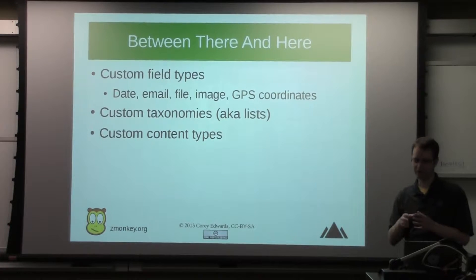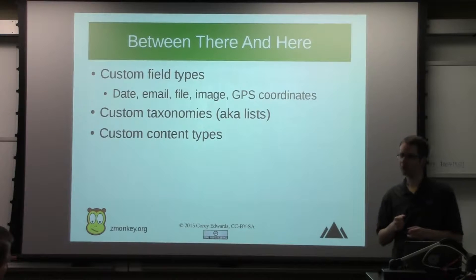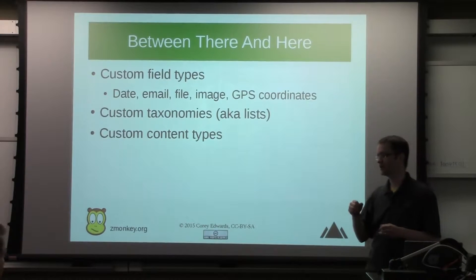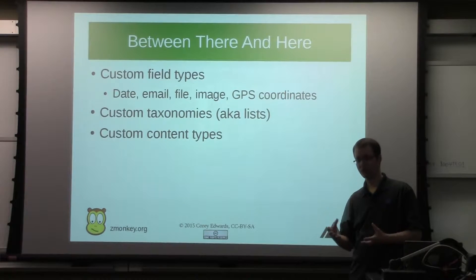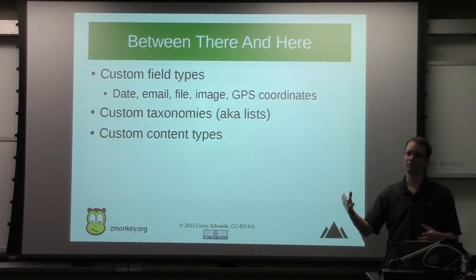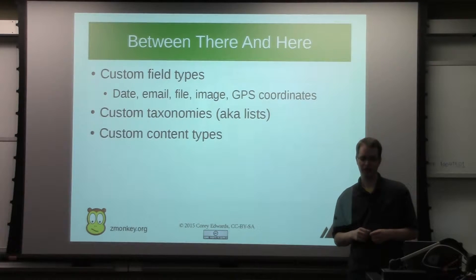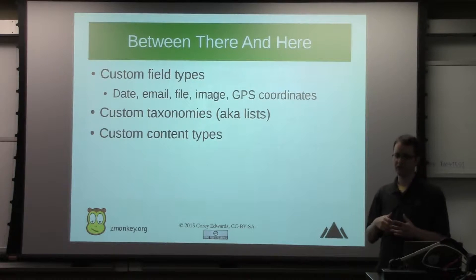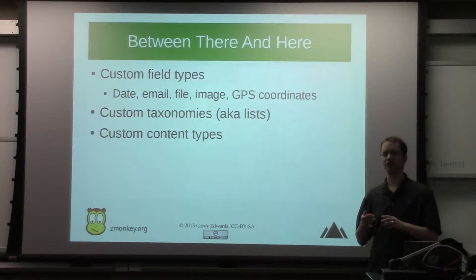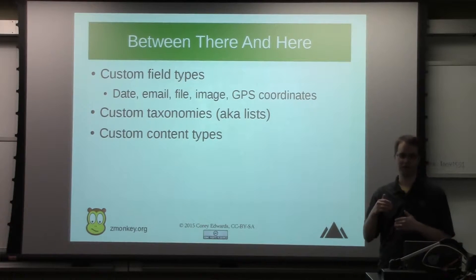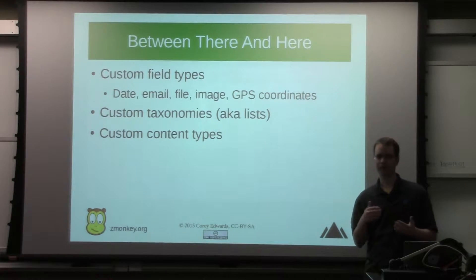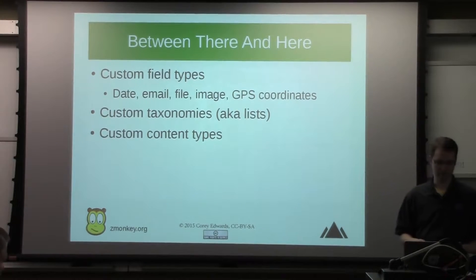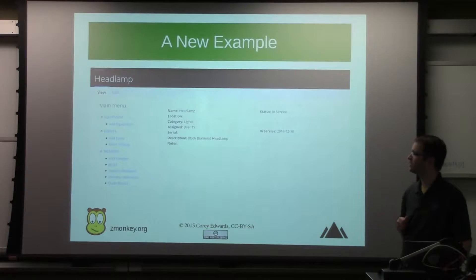For example, if we wanted to create a website keeping track of our book collection, we might define a vocabulary called 'genre' with terms like science fiction, romance, and suspense. Then we could create another taxonomy for the cover type: hardback, softback, leather bound. Between all those things you actually have a lot of power.